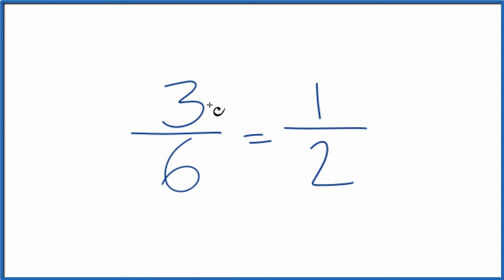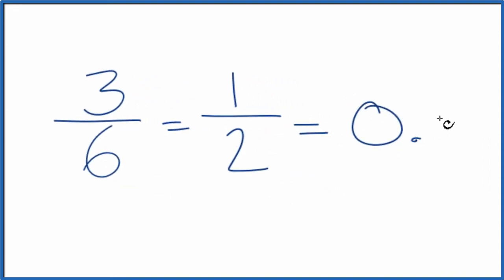So we could just put three divided by six or one divided by two in our calculator. We get 0.5. So the fraction three-sixths is equal to the decimal 0.5.